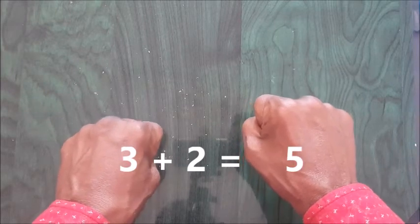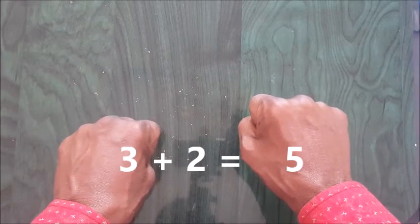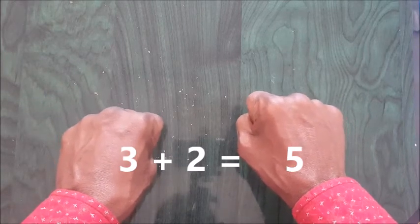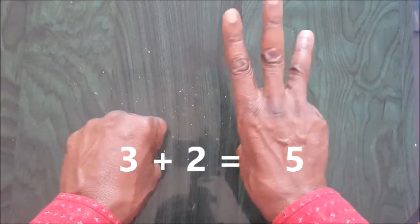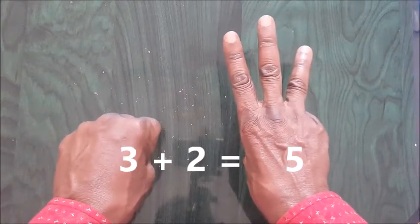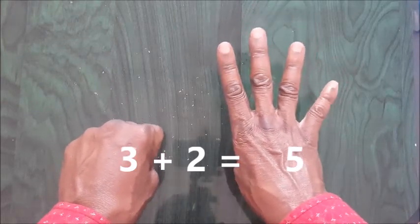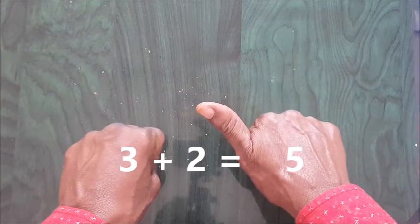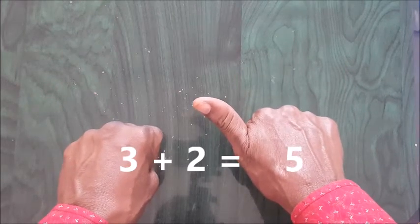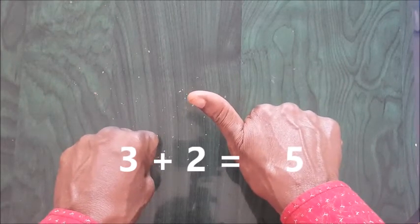Now we have 3 plus 2. 1, 2, 3 plus 2. Now watch out. Plus 2, 1. Then since it's 4, you bring those 4 fingers down and shoot up 2.